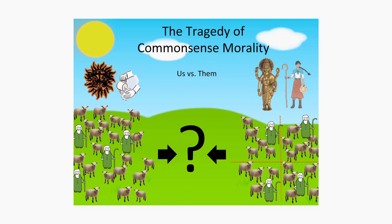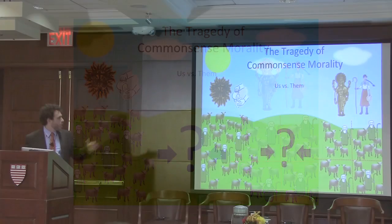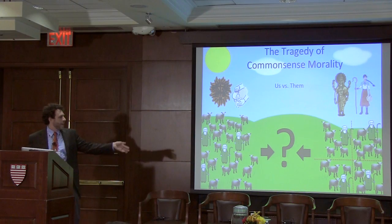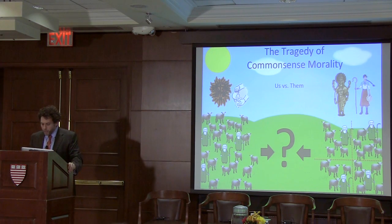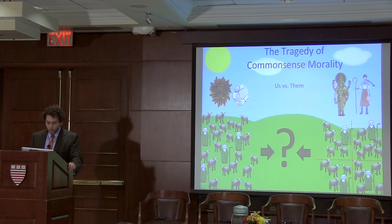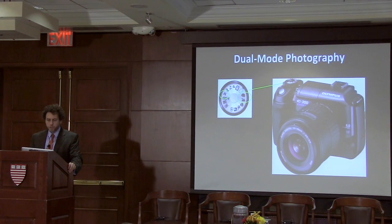It can be 'us versus them' in two senses. One is our interest versus their interest — we both want the land, something approaching a zero-sum game. The other is our vision of right and wrong versus your vision of right and wrong: over here we're happy with gay marriage, over there we're not. So it doesn't have to just be self-interest — it can be us versus them in terms of interest or in terms of moral ideals. That's the first idea.